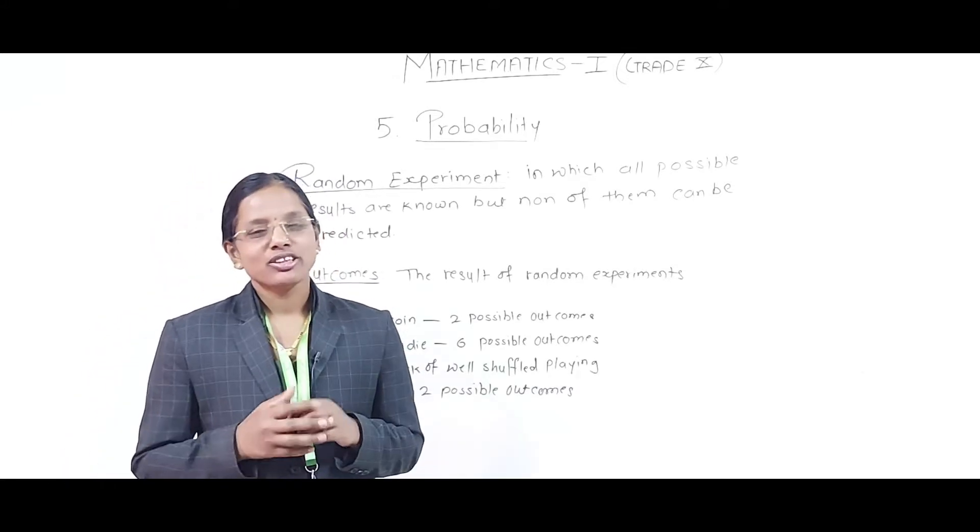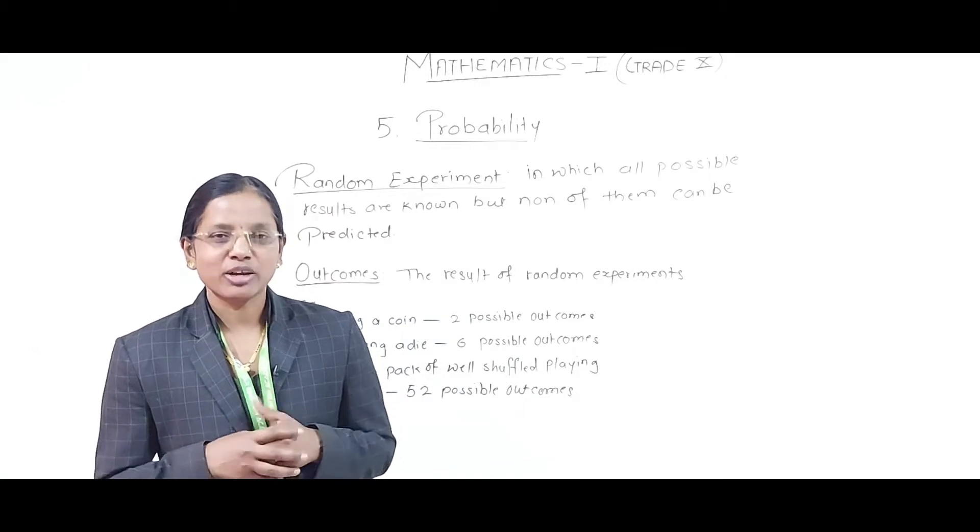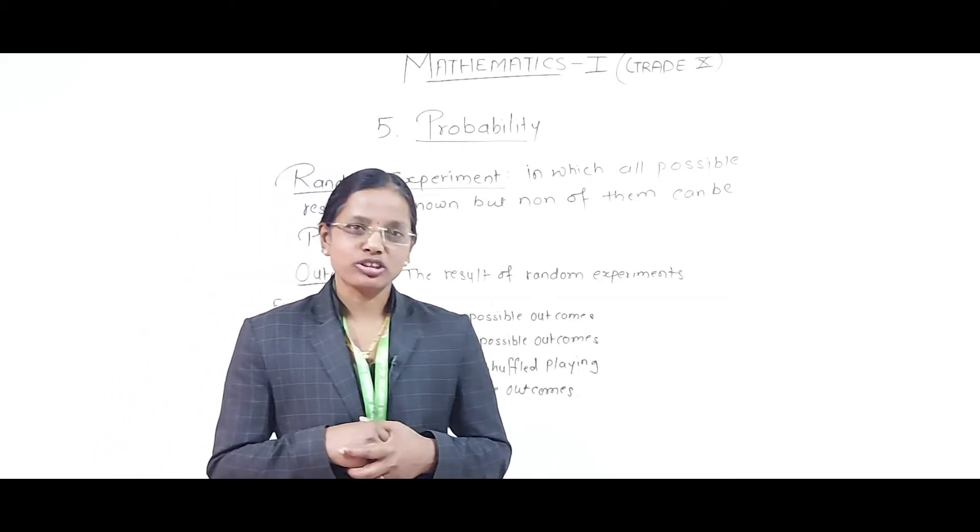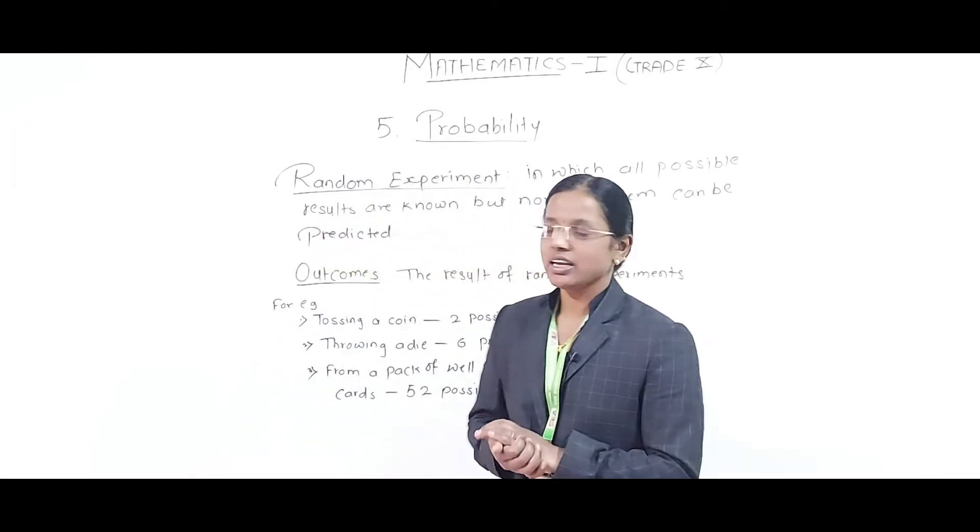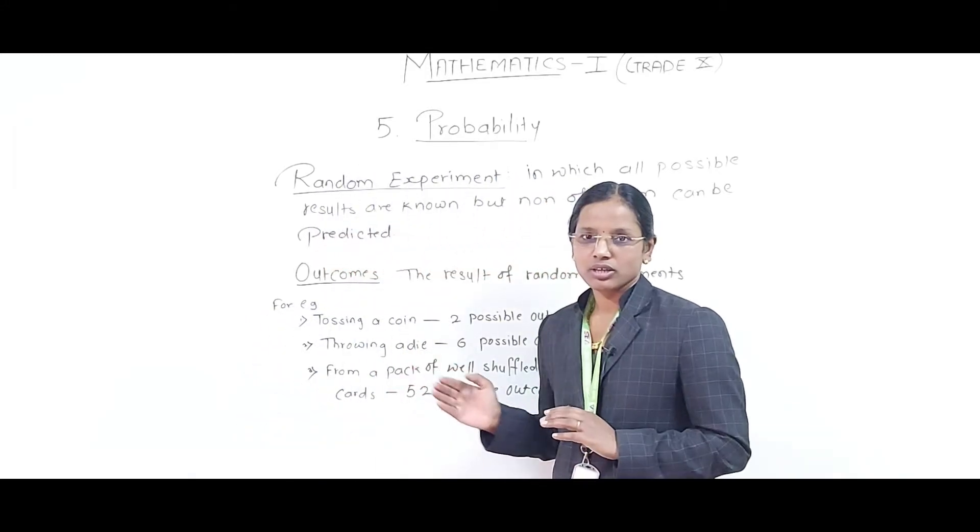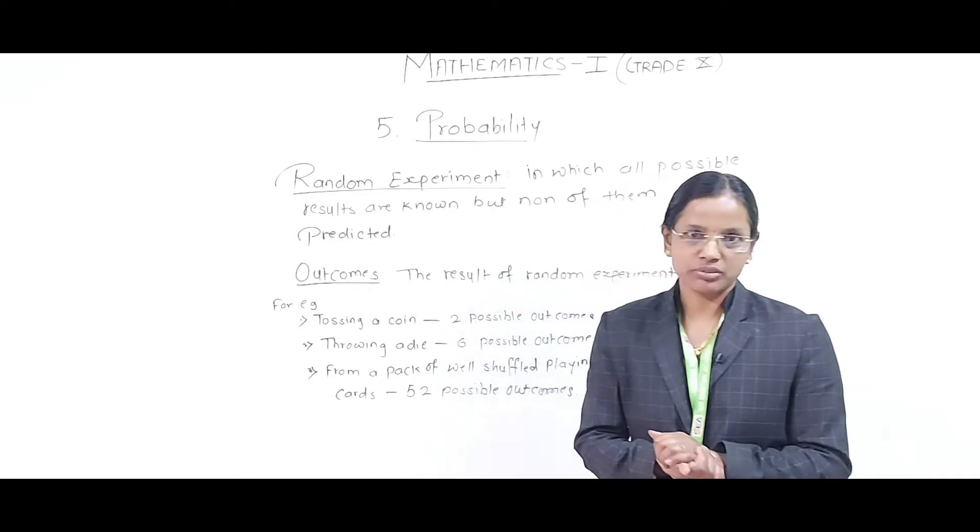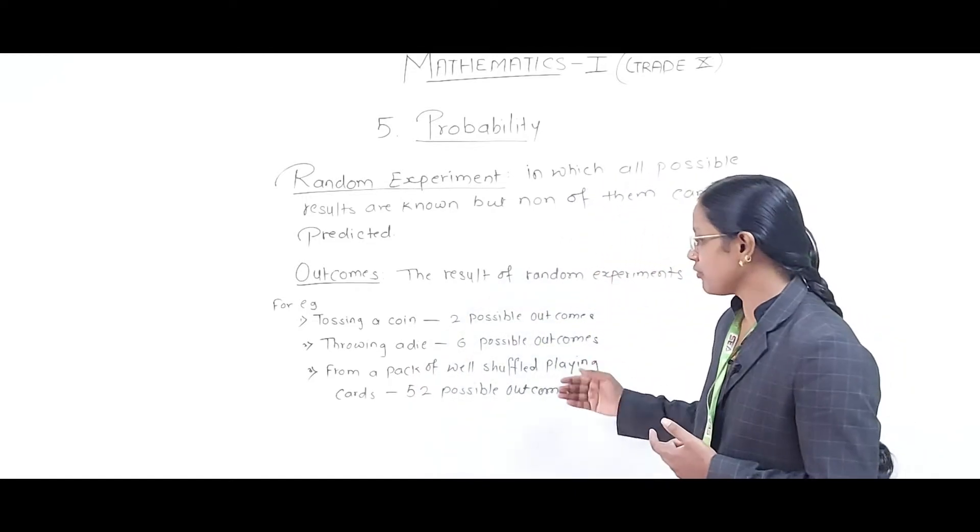For example, tossing a coin is an example of a random experiment. It has two possible outcomes: either head or tail. Similarly, when a die is thrown, it has six possible outcomes. A well-shuffled pack has 52 cards with 52 possible outcomes.